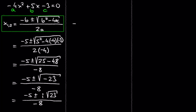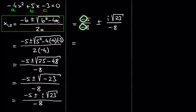Now we can split the fraction to negative 5 over negative 8, plus or minus i times the square root of 23 over negative 8. A negative divided by a negative is positive, so we can write 5 over 8, plus or minus i times the square root of 23 over negative 8.